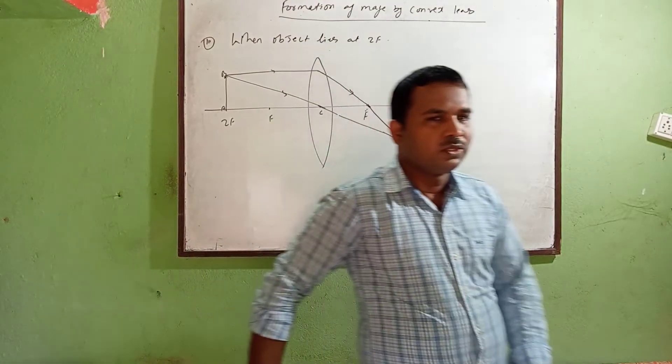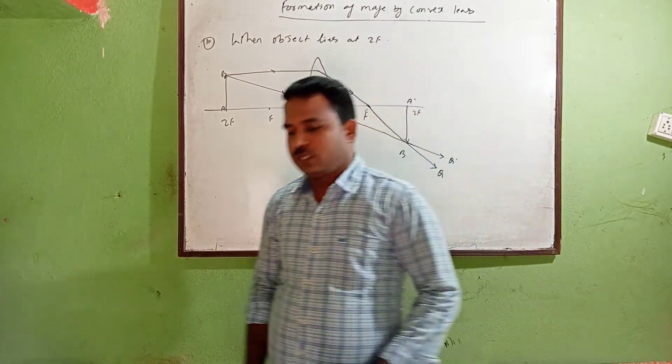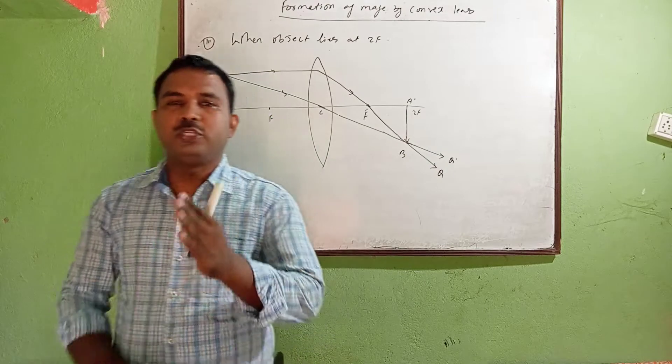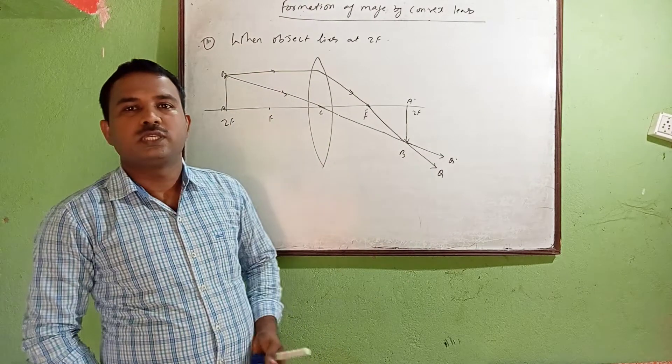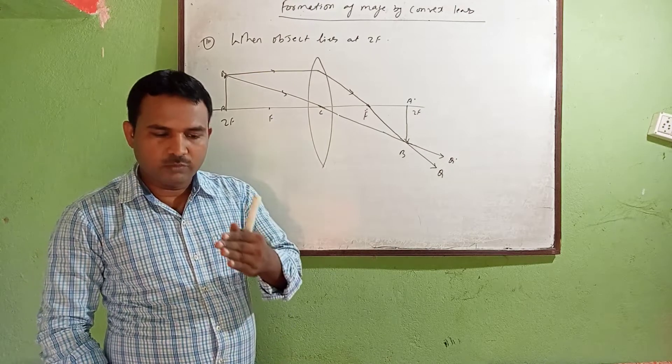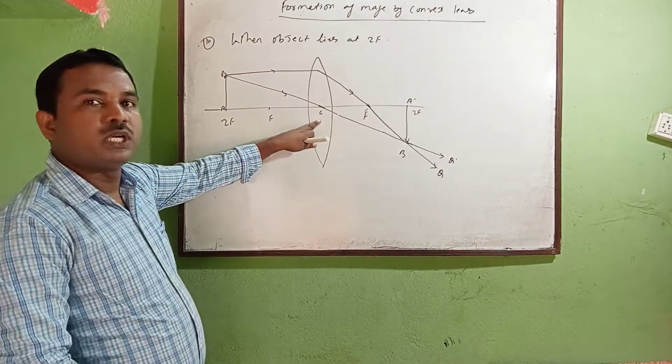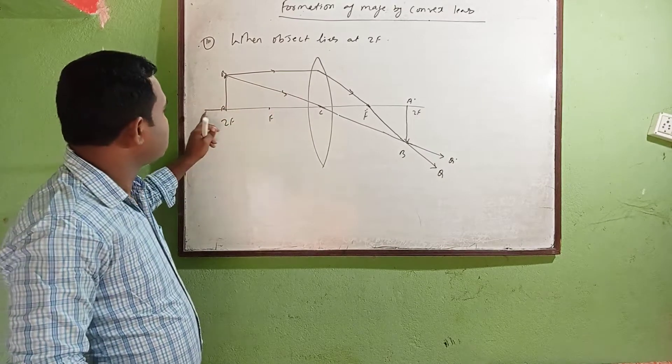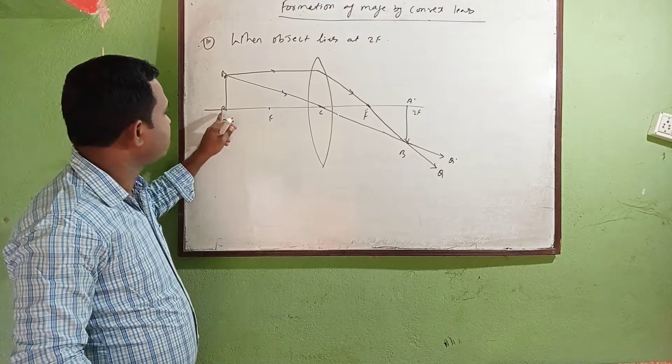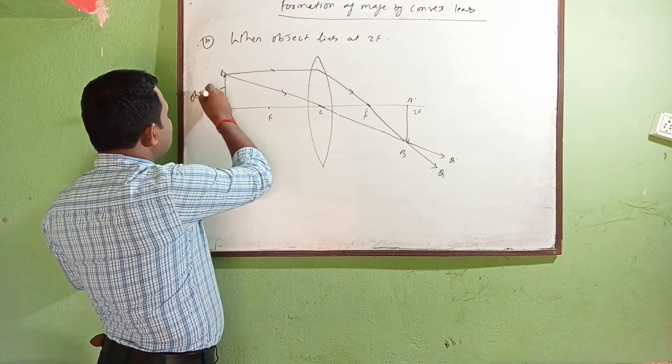Hello students, now this is the third case where the object will come beyond C, or at 2f. This is the optical center at infinity. Now it is coming beyond, so the third case where the object lies at 2f.